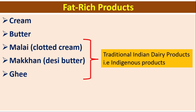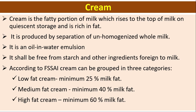The fat-rich products are cream, butter, malai, makhan, and ghee — these are the traditional indigenous Indian dairy products. Cream is the fatty portion of milk which rises to the top on quiescent storage and is rich in fat. Cream is produced by separation of unhomogenized whole milk; it is an oil-in-water emulsion and shall be free from starch and other ingredients foreign to milk. According to the Food Safety and Standards Authority of India, cream can be grouped into three categories.